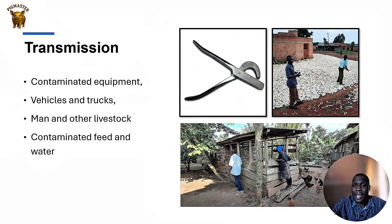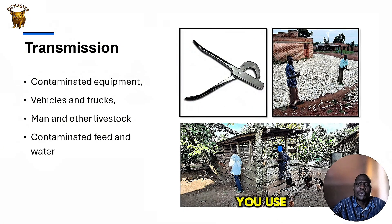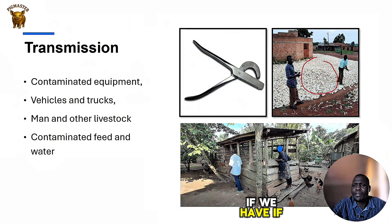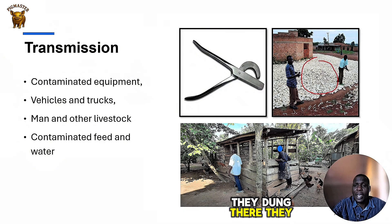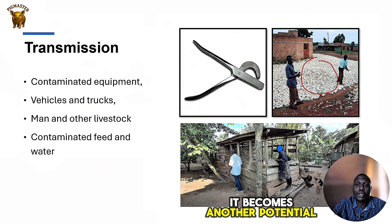Other transmission and contamination methods also exist. For example, the use of contaminated equipment — using one injection needle or one tail docker across different pens can spread infection. In Uganda, there is a practice of drying grain on the ground. If free-ranging pigs come and contaminate this maize — defecating and urinating on it — and then the maize is processed into animal feed, it becomes another potential source of the virus.